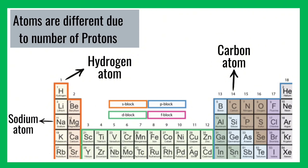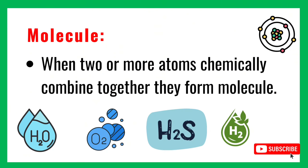Carbon is made up of carbon atoms, hydrogen is made up of hydrogen atoms, and sodium is made up of sodium atoms. A question arises: why are atoms different? Atoms are different due to the number of protons — for example, hydrogen has one proton. When two or more atoms chemically combine together, they form a molecule.